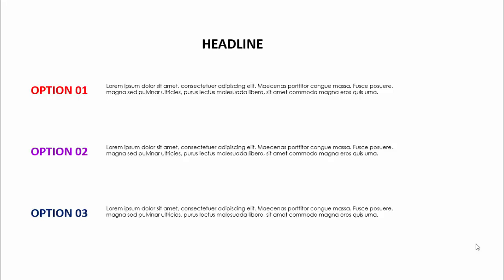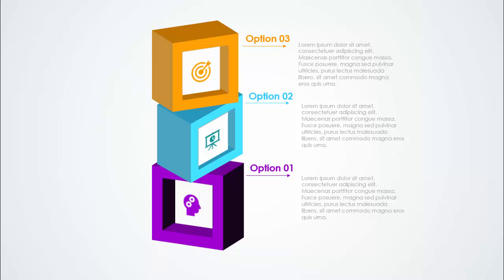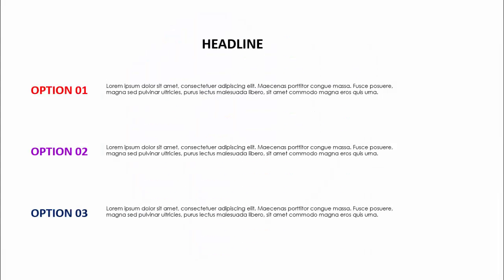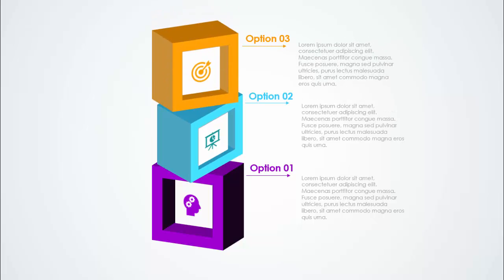If we were told to create a three-option slide, generally our slide looks something like this — simple, nothing special. You just put option one with all the text, then option two and option three. Instead of creating the slide like this, let's do something more meaningful and informative. You can see the difference: this is the converted version with option one, option two, and option three. Try to create slides in a more innovative way.